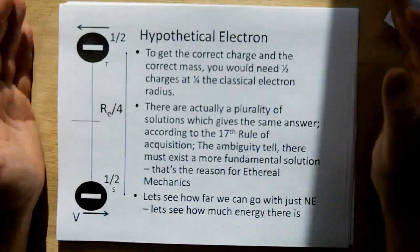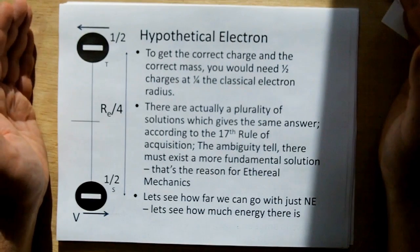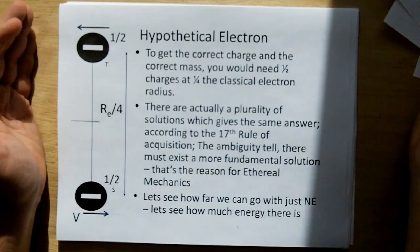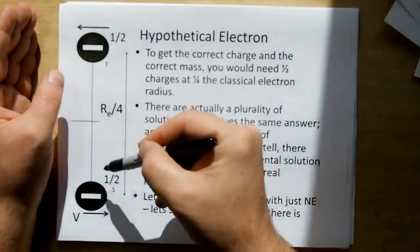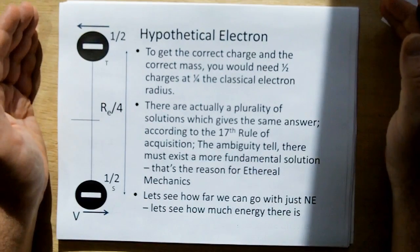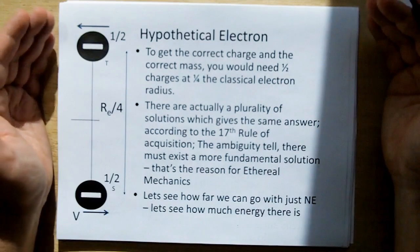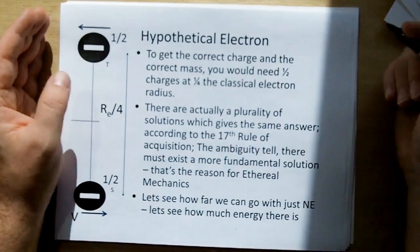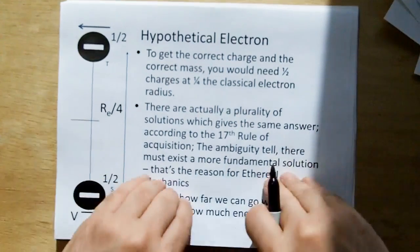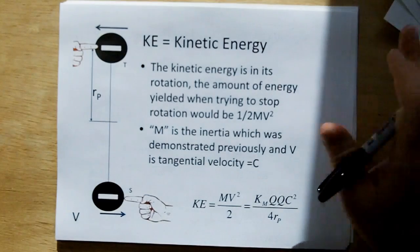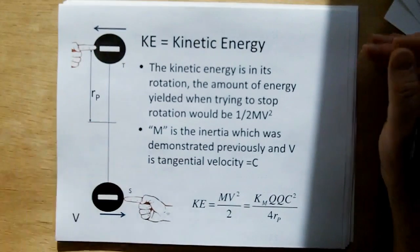Suppose we had a hypothetical electron. We already found we can get the mass of an electron, but that inertia that we showed you before has twice the charge of an electron. So if we pick half charges and we change the distance to Re over 4, then we can get the mass of an electron with the correct charge. And in fact there's a plurality of solutions which will give the same answer. Again, there's something more fundamental going on according to the 17th Rule of Acquisition. Again, let's see how far we can go.